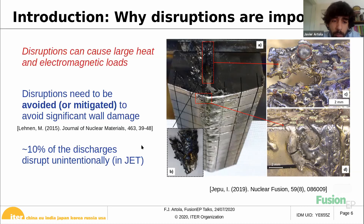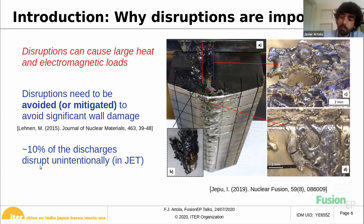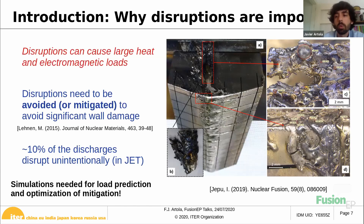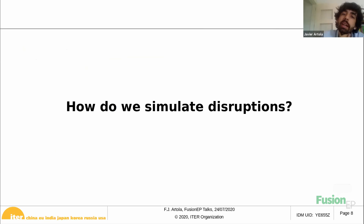There are a lot of disruptions we cannot control. For example, in JET at least 10% of discharges disrupt unintentionally. So even if we don't violate stability limits, we still get disruptions. This is why we need simulations in order to understand why we trigger disruptions, predict how large the loads on the wall will be, and optimize mitigation with shatter pellet injection and other techniques.